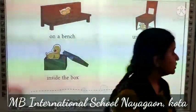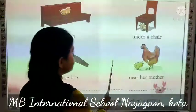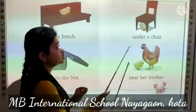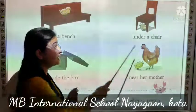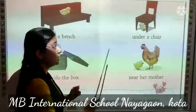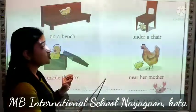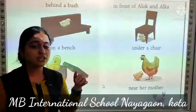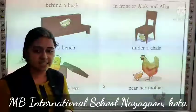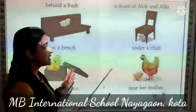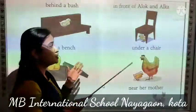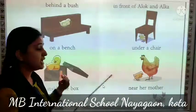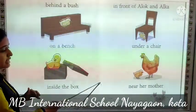Next, a chik is under a chair. Ab yaha pere prepositions word hame under. Chik kaha hai? Chair ke niche. Under means niche. A chik is under a chair — toh chik ki place bata raha hai, woh chair ke niche hai.